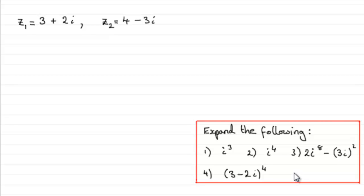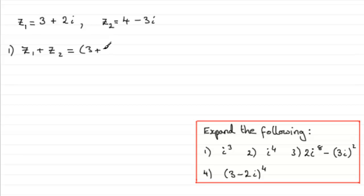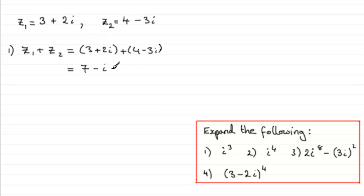So let's start by showing you how we can add two complex numbers. If we've got Z1 equals 3 plus 2i and Z2 equals 4 minus 3i, then if we were to do Z1 plus Z2, we've got 3 plus 2i plus 4 minus 3i. What we do is add together the real values — the 3 and the 4 — and then add together the imaginary values, the 2i and the minus 3i. So we get 3 plus 4 is 7, and 2i minus 3i gives minus i. So you've got 7 minus i.